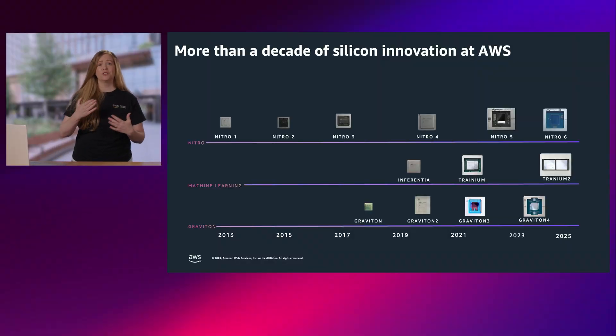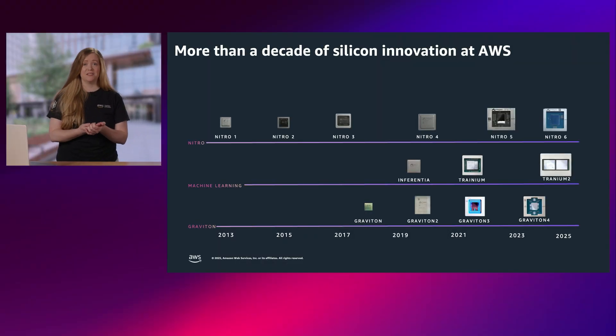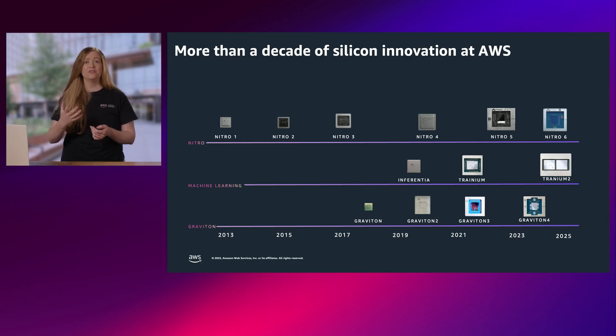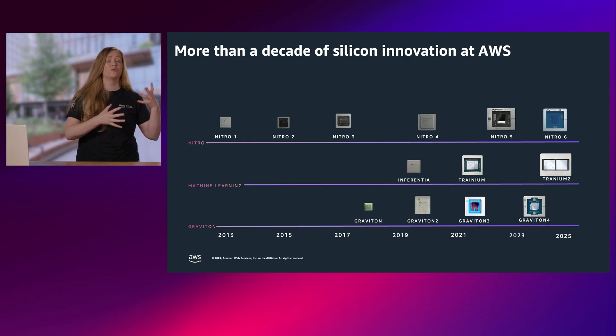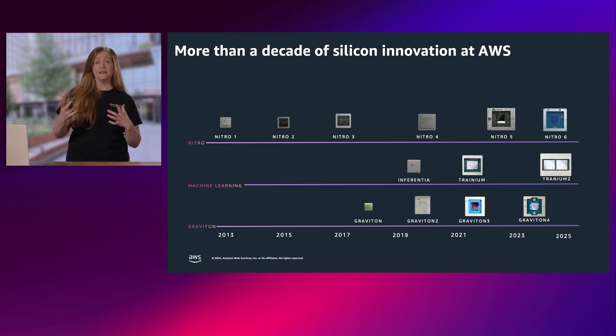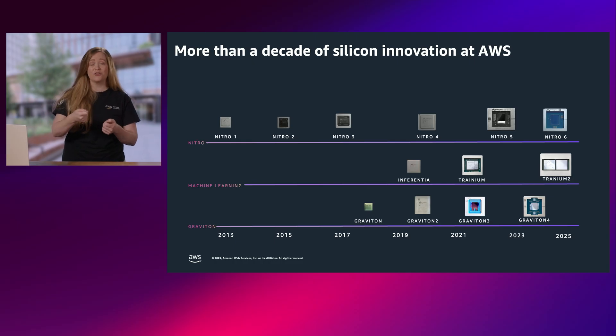What this means is we're bringing you more than a decade of silicon innovation at AWS. Let's take a look at these areas one by one. Fundamentally, the Nitro system forms the backbone of modern Amazon EC2 instances. When we add a new server to our data centers, to our regions, to our availability zones, what makes that server an EC2 instance is Nitro.